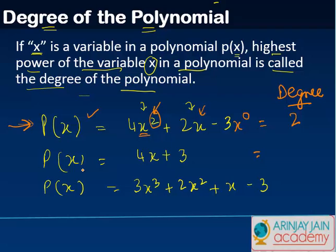Similarly, if you see the next one, p(x) = 4x + 3. What is the degree of x? We just have 1x over here and x is like x to the power 1. So the degree is the highest power of x in this particular equation which is 1.